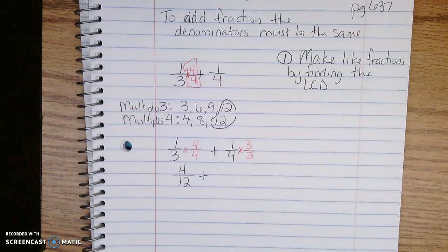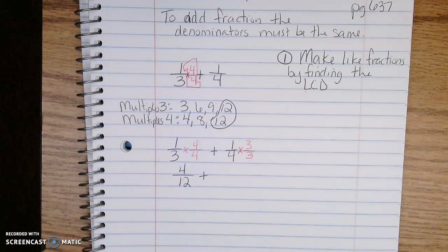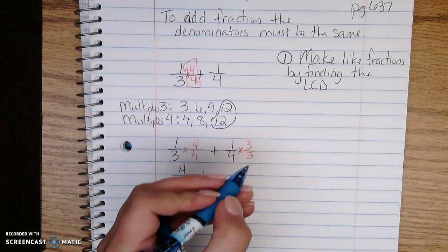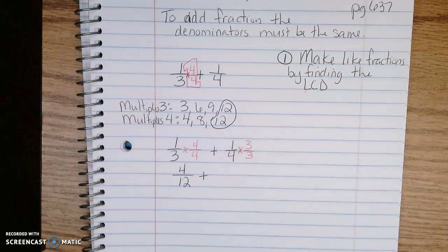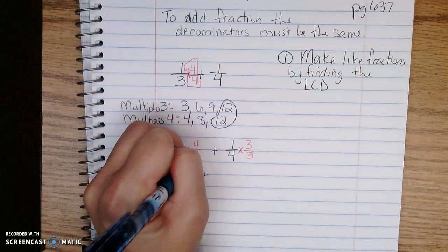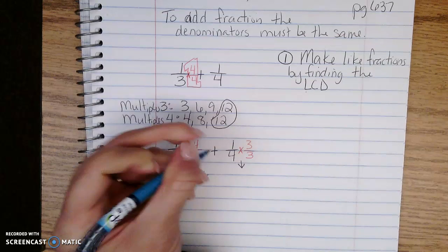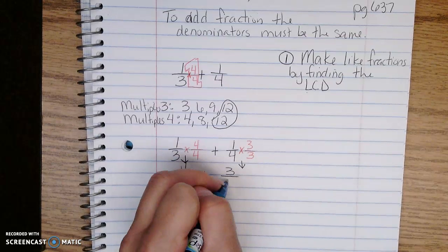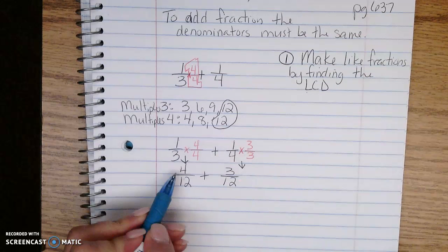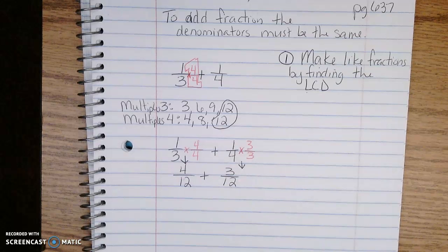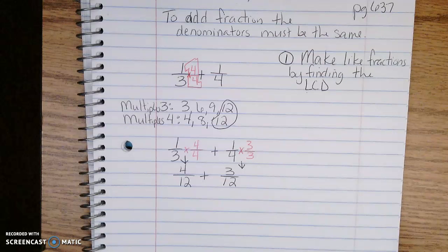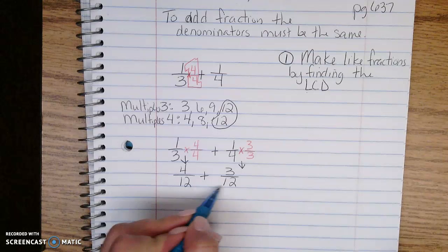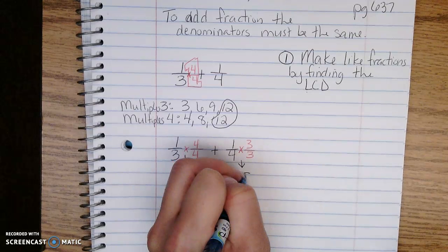I must multiply by a power of 1, so 3 over 3. 1 times 3 is 3 and 4 times 3 is 12. Now I have 4/12 plus 3/12. I have like fractions with common denominators, so I'm going to add those.